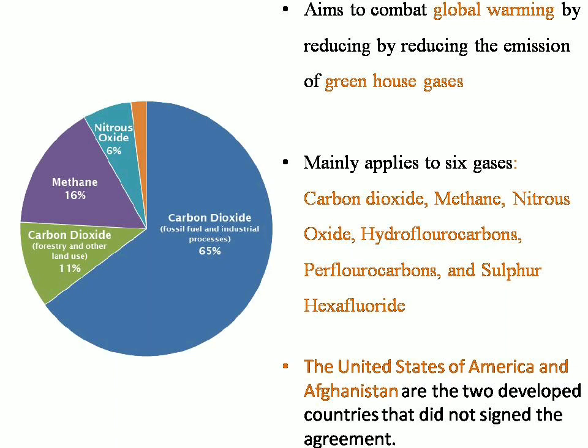The Kyoto Protocol mainly focuses on reducing six important greenhouse gases: carbon dioxide, methane, nitrous oxide, hydrofluorocarbons, perfluorocarbons, and sulfur hexafluoride. Among the developed nations, the United States of America and Afghanistan are the only two nations that did not sign the Kyoto Protocol. From this we can understand that human activities are the real reasons behind global warming, greenhouse gas effects, and such climatic changes in the environment.